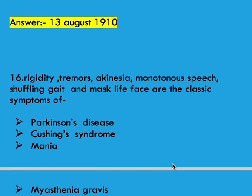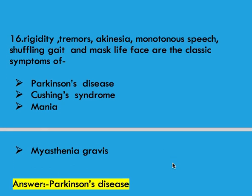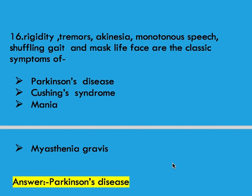Rigidity, tremors, akinesia, monotonous speech, shuffling gait, and mask-like face are the classic symptoms of options: Parkinson's disease, Cushing's syndrome, mania, and myasthenia gravis. Right answer is Parkinson's disease.